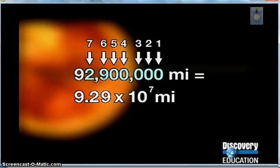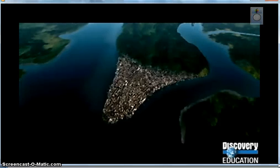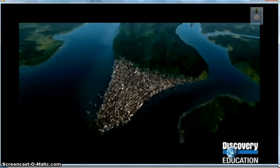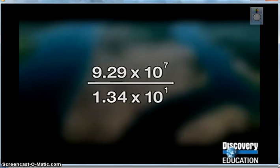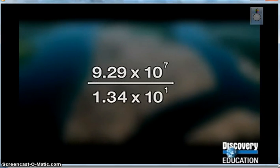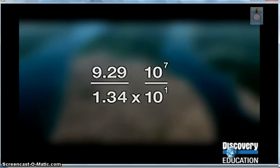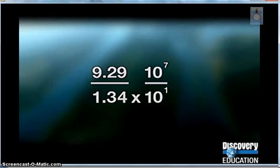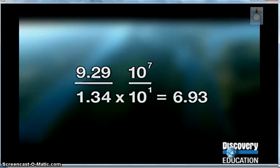Scientific notation is a condensed way to write some numbers, and it also provides an easier way to compare them. Watch. How many Manhattan lengths would it take to reach the Sun? We need to divide the distance to the Sun by the length of Manhattan. In scientific notation, that can be written as... Break that into parts, since it's multiplying and dividing. It's the same as 9.29 divided by 1.34, all times 10 to the seventh, divided by 10 to the first.